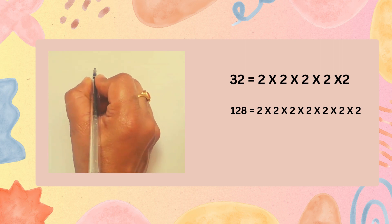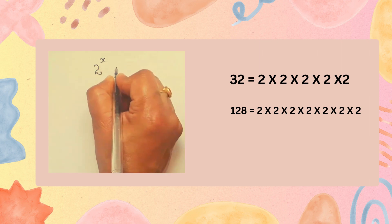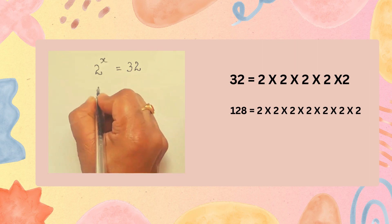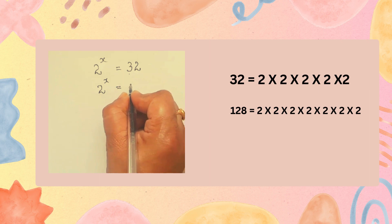Now, according to the given question, 2 to the power of x is equal to 32. 2 to the power of x equal to 32 can be written as 2 to the power of 5.